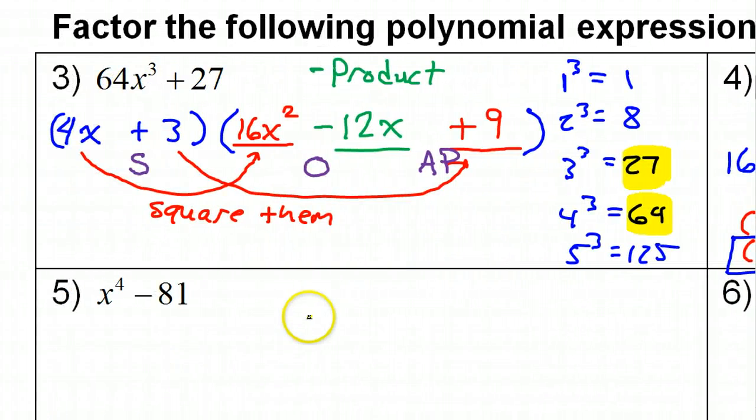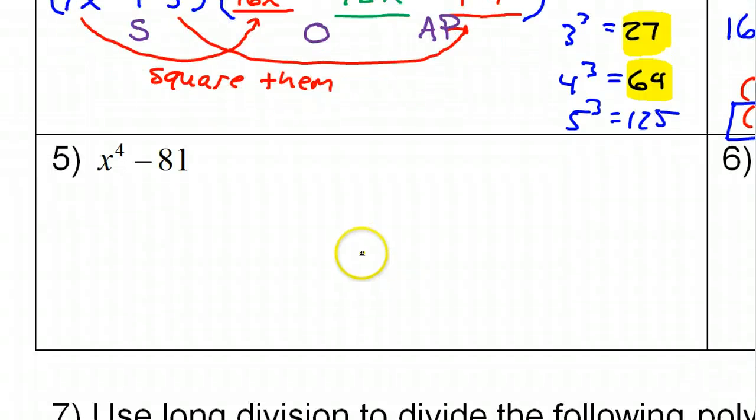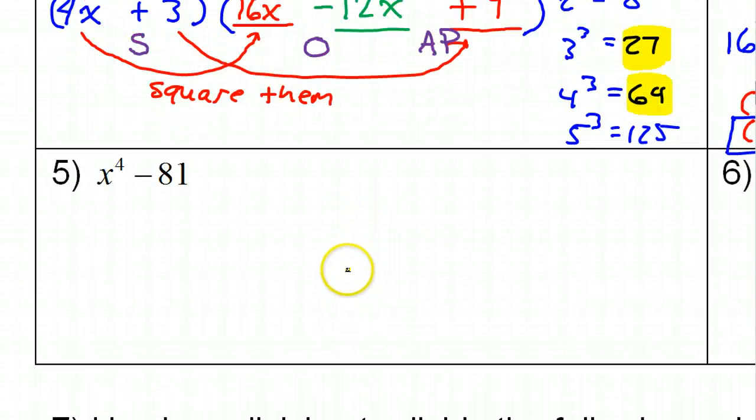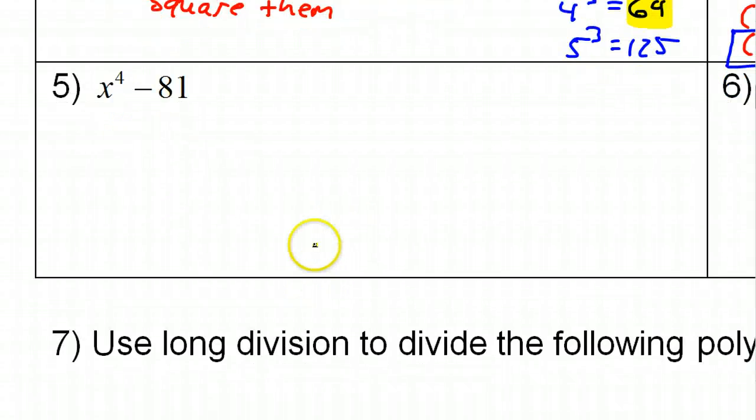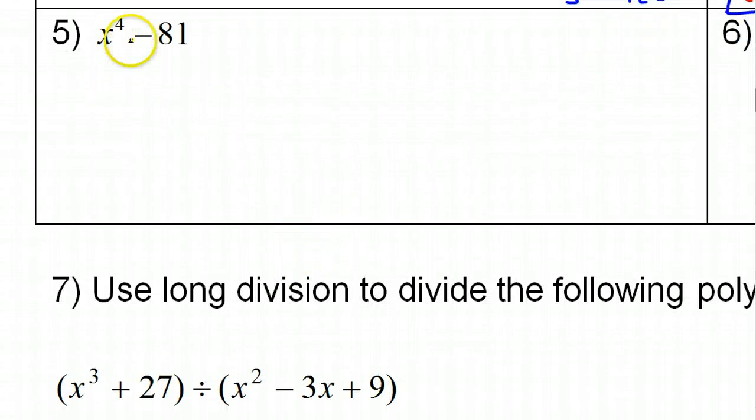Now, number 5 makes some students nervous because of the high power that you see right here, x to the fourth power. But you needn't worry, because this is really just the difference of two squares. Just like we looked at in problem number 4. So just factor it as the difference of two squares, and go as far as you need to go. So, let's start off by our basic difference of two squares.